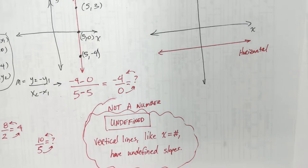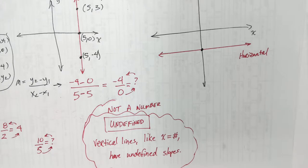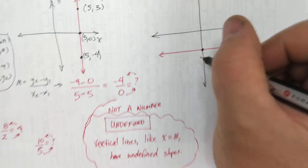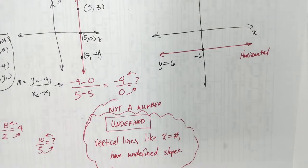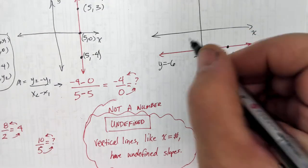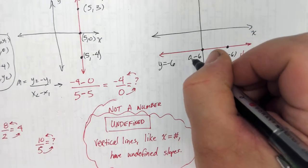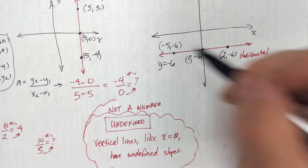This one is horizontal. Vanessa, what number is that? Negative 6. So this would be y equals negative 6. Everywhere on that line, y is going to equal negative 6. It's horizontal — this would be (2, negative 6), (0, negative 6), (negative 5, negative 6).